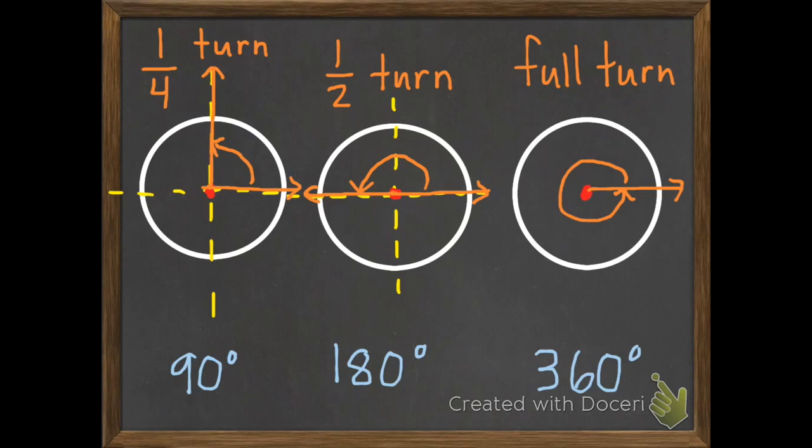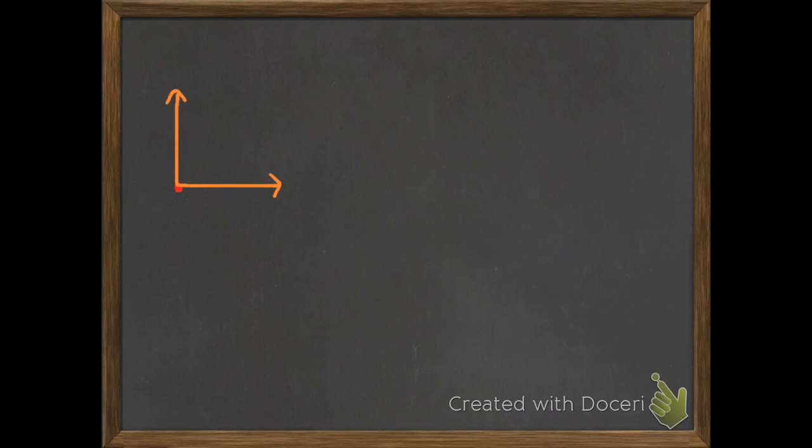Later on, we're not going to have these circles with our angles. We're just going to have these endpoints and rays. So they'd look a little bit more like this. When we have a 90 degree angle, or a one-fourth turn, we generally make our angle here in the middle more of a square to show that it's 90 degrees.